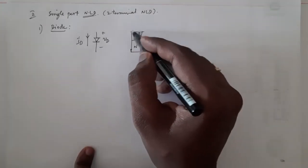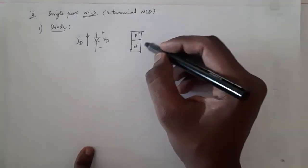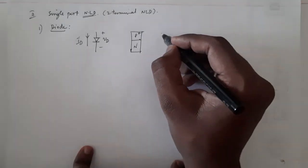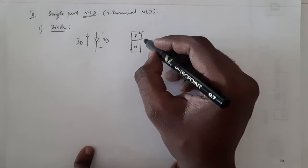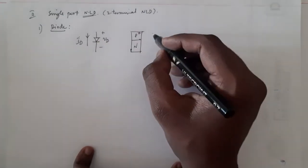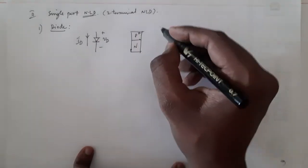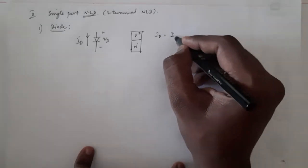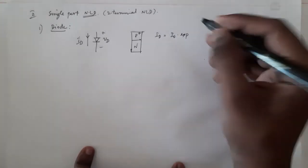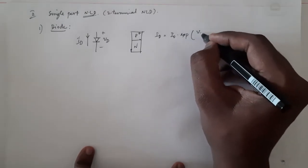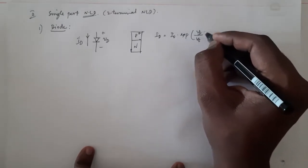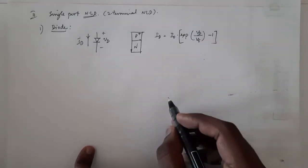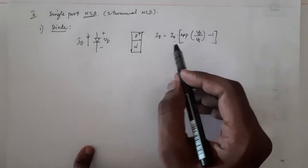What we will use is the voltage-current relationship derived from the PN junction, as learned in your basic device course. The voltage-current relationship of the diode is given as: ID = I₀ × (e^(VD/VT) − 1).